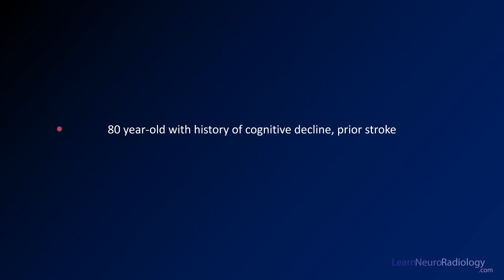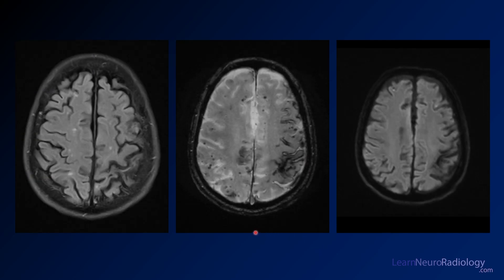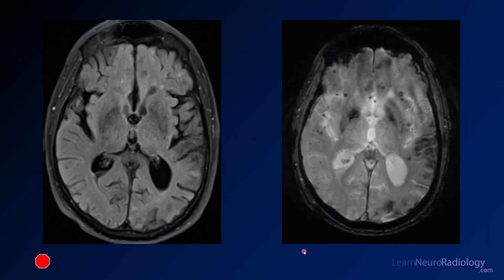We'll start with a case of an 80-year-old with a history of cognitive decline and prior stroke. Here you see some images through the brain from an MRI. We have a FLAIR, a gradient or susceptibility-sensitive sequence, and in this case, diffusion. What you'll note on the susceptibility sequence is a number of small areas of susceptibility around the periphery of the brain parenchyma. You'll also see along the surface of the sulci some low signal along the surface of the brain, along the gyri, and down into the sulci. That's what we would call siderosis or superficial siderosis. Going to a different level, you just see more of the same — more scattered peripheral hemorrhages and more superficial siderosis.